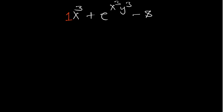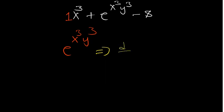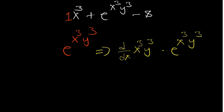Having an exponential function as given in this case is going to be very simple. We have e to the power (x³y³). The derivative of an exponential function with base e: just multiply the derivative of the power by the original function. So I need to find the derivative of the power, which is x³y³, and then multiply by the original function e^(x³y³).